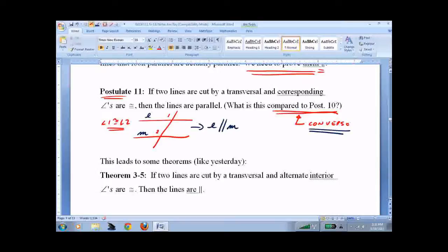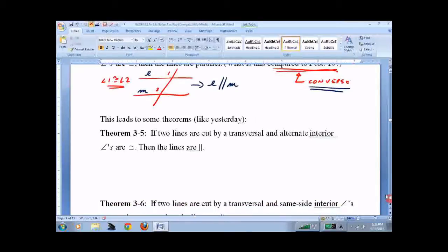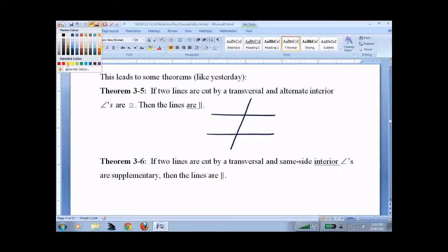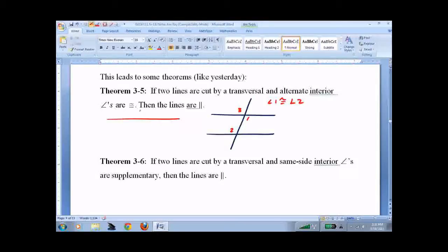So, this gives us some theorems just like the previous class. Two lines are cut by a transversal. And angle 1 and angle 2 are given as congruent. Then we know these are parallel lines. It's a theorem so we can prove it.